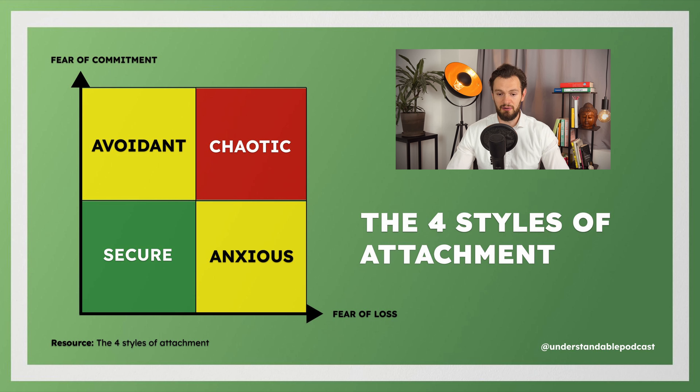There are four attachment styles plotted on two axes: on the X axis, fear of loss — fear of losing someone, getting left alone; and on the Y axis, fear of commitment — fear of intimacy, being close to someone. Secure attachment is low in both. Avoidant attachment is high in fear of commitment, low in fear of loss. Anxious attachment is high in fear of loss, low in fear of commitment. And chaotic attachment is high in both fear of commitment and fear of loss.